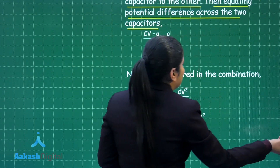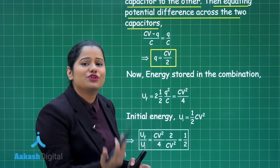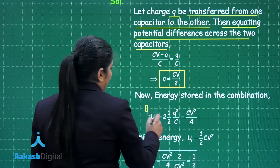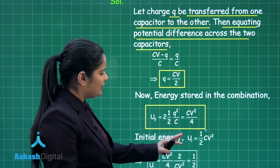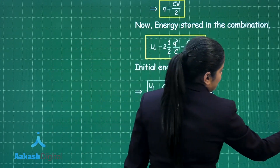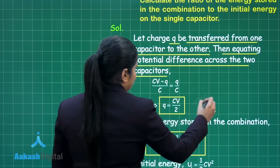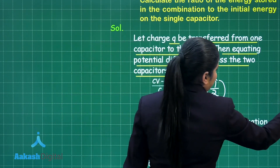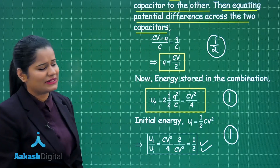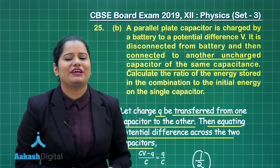The energy stored in the combination of capacitors — whether series or parallel — is the sum of energy stored in individual capacitors. When you calculate the final energy stored in the combination, it comes out to be CV² by 4, and the initial energy is half CV². Taking the ratio of these two gives the final result of one half. For the marking scheme: half mark for charge transfer, 1 mark for energy in combination, and 1 mark for the ratio — giving 2 and a half marks for this part and 5 out of 5 for the question.